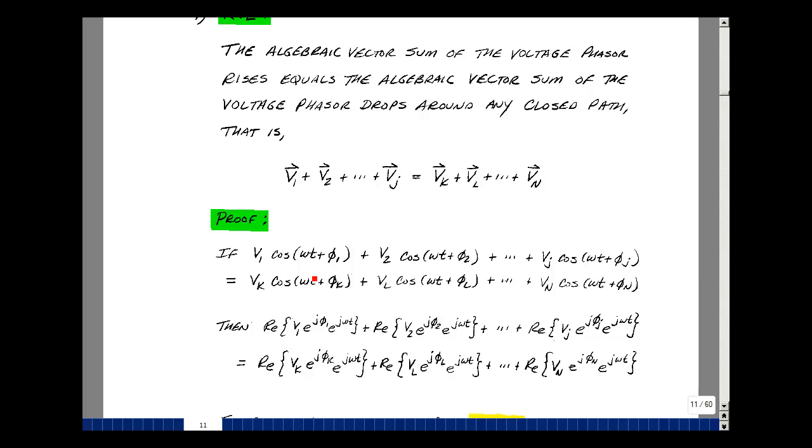Okay, what is the cosine function? Well, it's the real part of our phasor notation times e to the j omega t. So let's just express this then as V1, e to the j phi 1 times e to the j omega t. Do that for V2 through V sub j. Those are our rises in voltage.